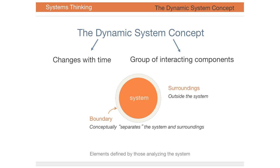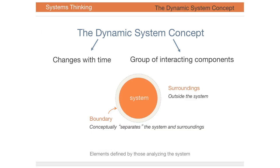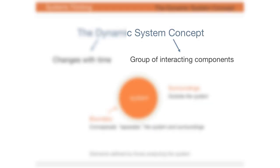This graphic introduces the concept of a dynamic system. Dynamic means that the system is changing with time. We consider a system to be a group of interacting components.